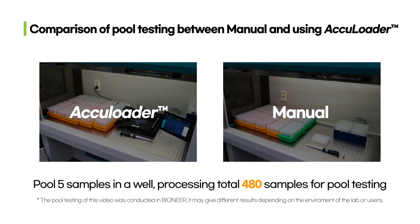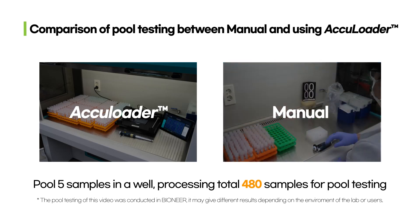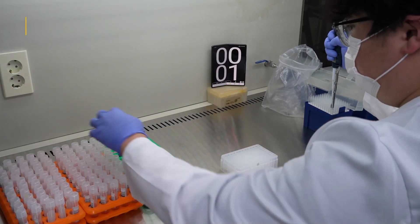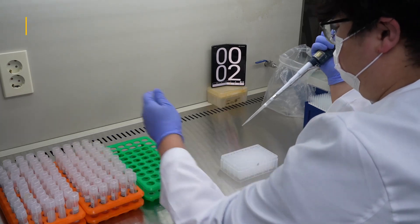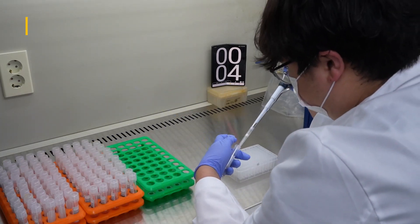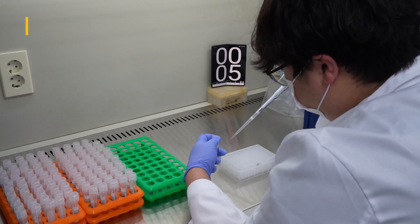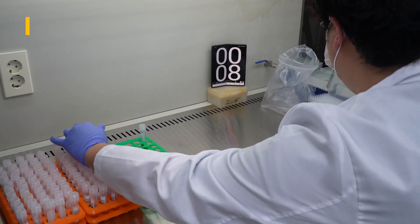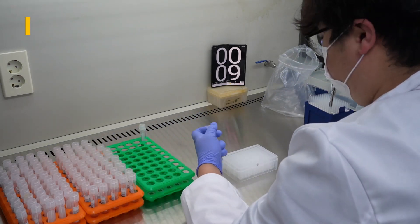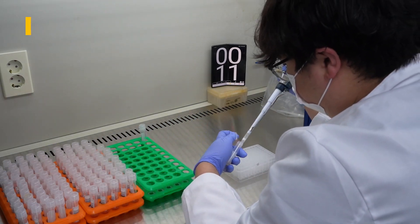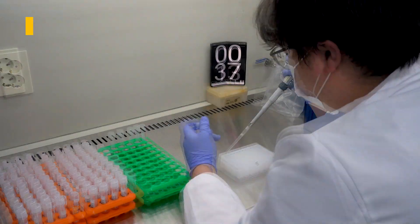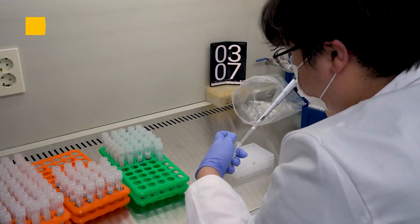How do we perform pool testing for 480 samples manually? We prepared the 480 samples and performed pool testing manually. It seems that manual pool testing is initially faster than using the AccuLoader; however, as time goes on it gets harder to find the accurate well position and the user must worry about misloading.